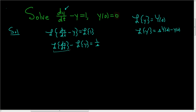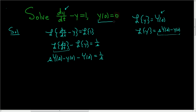The Laplace of dy/dt — well, dy/dt is y prime — so that's simply s times big Y of s minus y of 0, minus big Y of s, and this equals 1 over s. At this point we use our initial condition: y of 0 is 0, so that term vanishes. So we have little s times big Y of s minus big Y of s equals 1 over little s.